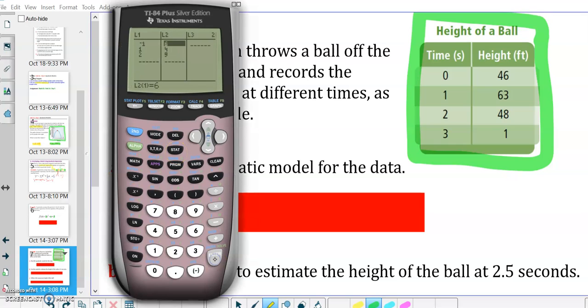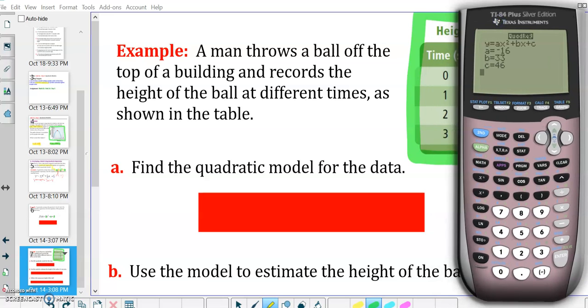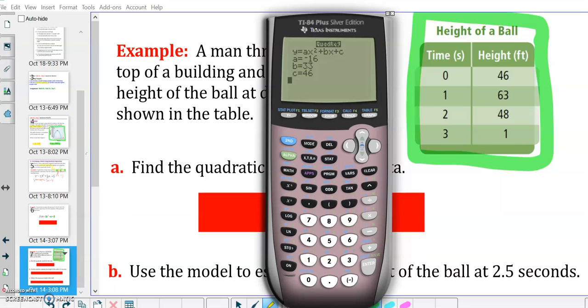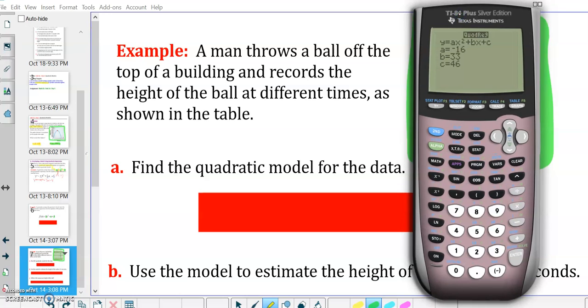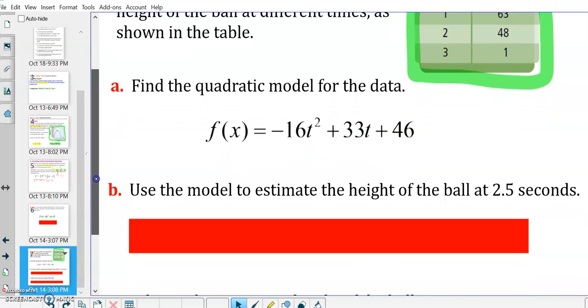So let's go ahead and let's enter in our data points here. So the time will be our x values. That's going to be pretty common. Time is almost always going to be your x value. So 0, 1, 2, 3. L2, we have 46, 63, 48, and 1. So we're going to go stat over to calc. Option 5, quad reg. Enter. We're getting negative 16, positive 33, and positive 46. So that positive 46 is our y-intercept, and we kind of already knew that because we have 0, 46 on our graph. And then negative 16, that's going to be a pretty common theme. That's just acceleration due to gravity when you're dealing with feet in seconds.